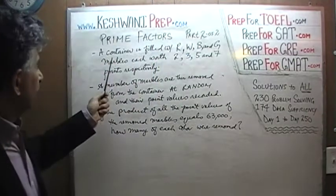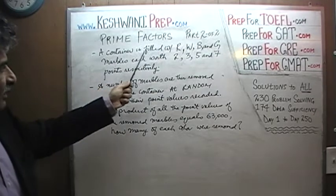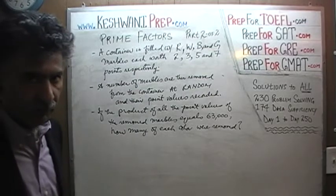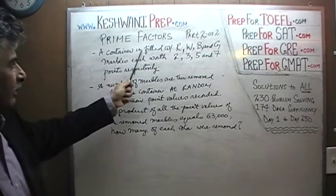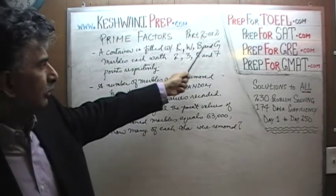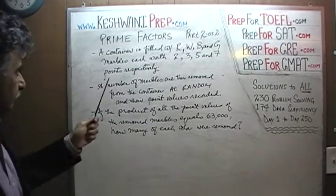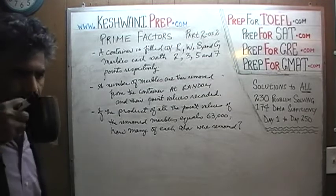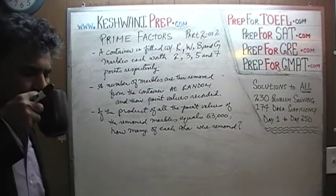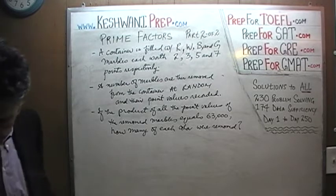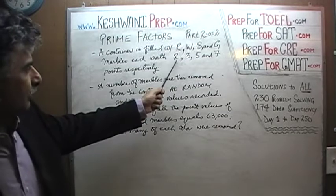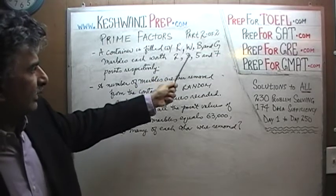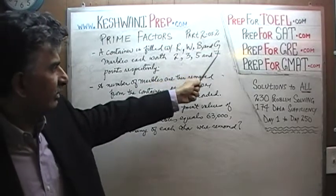Here's what the problem says: a container is filled with red, white, blue, or green marbles — four different colors of marbles. Each marble is worth two, three, five, and seven points respectively. So red is worth two, white is worth three, blue is worth five, and green is worth seven.